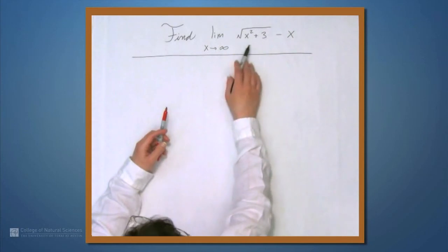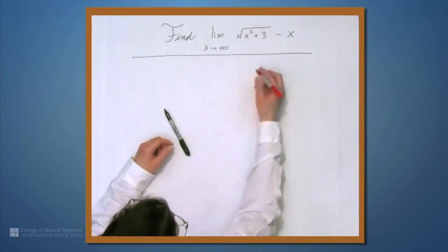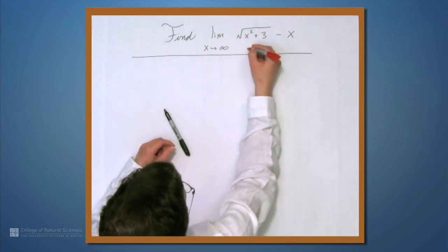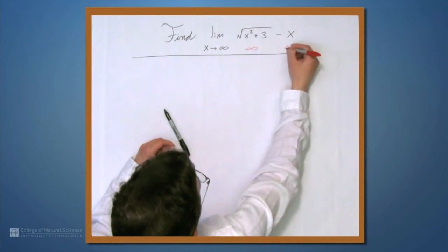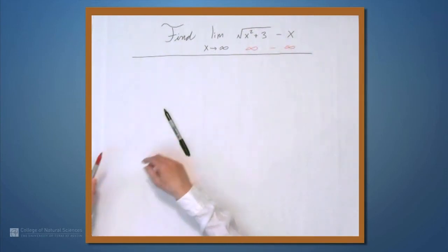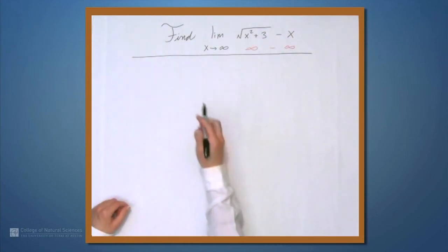Often when we're dealing with limits we're looking at a ratio, but here we have a difference, and it's not a particularly nice difference because we have something that goes to infinity as x goes to infinity minus something else that goes to infinity as x goes to infinity. So let's try to rewrite this to make it easier to deal with.